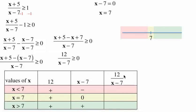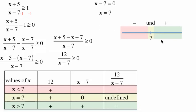Now we do 12 divided by x minus 7. When x is less than 7, that's positive divided by negative, which is negative. When x equals 7, that's positive divided by 0, which is undefined — division by 0 is undefined. When x is greater than 7, you have positive divided by positive, which is positive — which is what we're really after. So on the number line we have negative, undefined, and positive. When is this expression positive, or greater than or equal to 0?